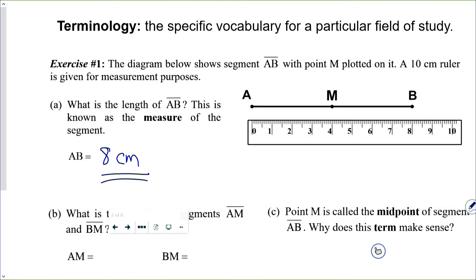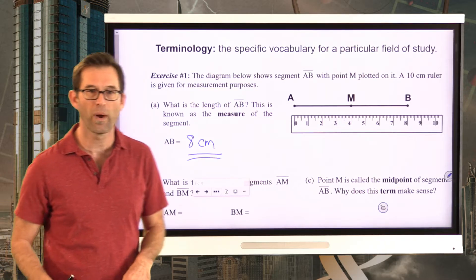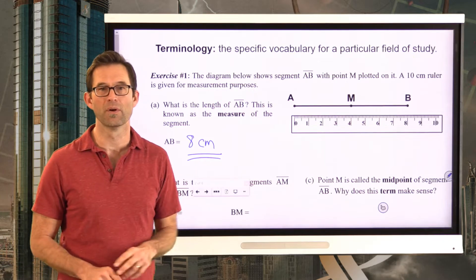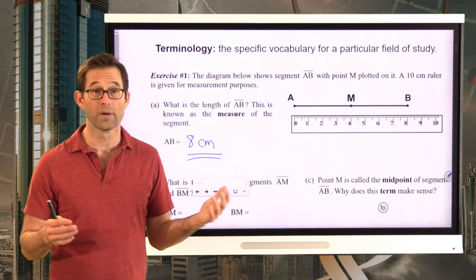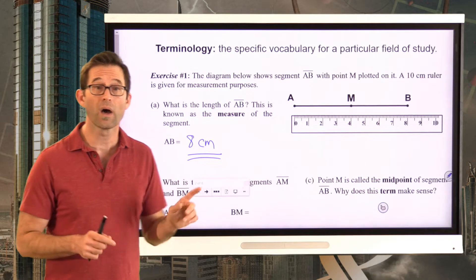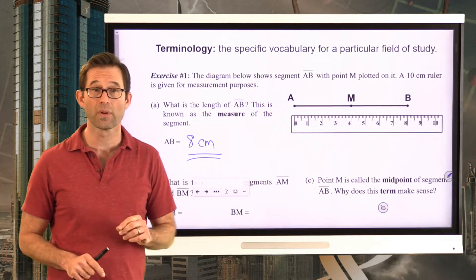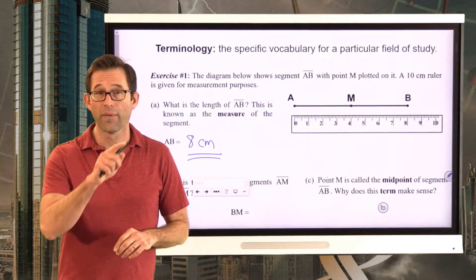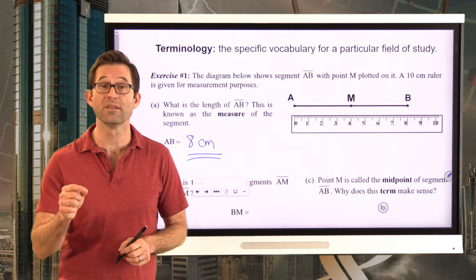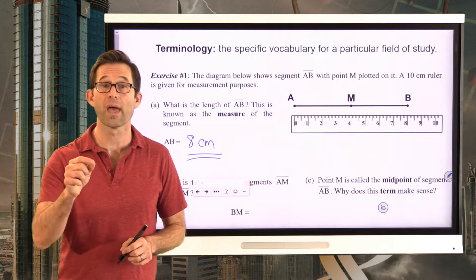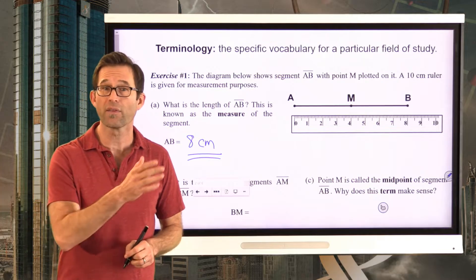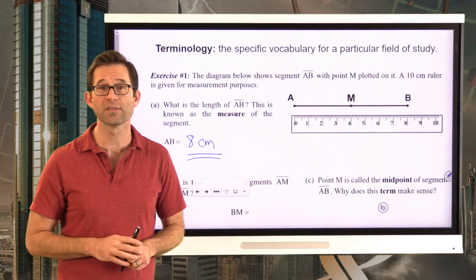Now, you might say to yourself, wait a second, why doesn't that AB have like a little line segment over it, or a little ray, or whatever over it? Well, whenever we've got two letters sitting beside each other like that in geometry, and there's no symbol across the top, what we are literally talking about is the distance between points A and B, or the length of line segment AB. So the length of line segment AB is eight centimeters.